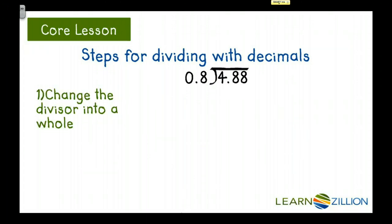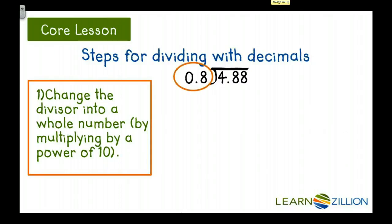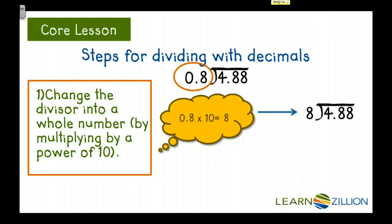Now let's look at the first step. You should change the divisor into a whole number by multiplying by a power of 10. So here's our divisor, 0.8. And in order to change it to a whole number, we have to multiply it by 10, and we would get 8. So now our problem looks like this.